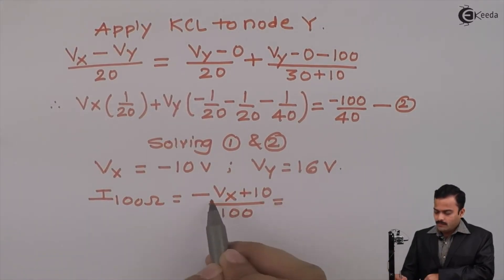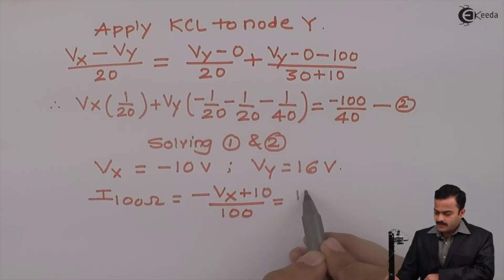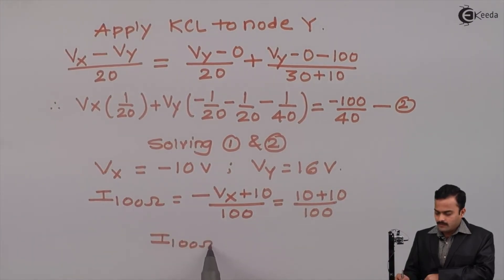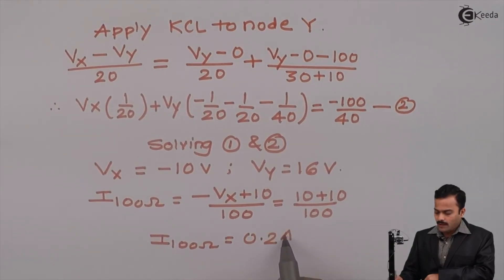So minus Vx will be minus minus 10, so it's plus 10 plus 10 divided by 100. So it is 20 by 100 and the current flowing through 100 ohm will ultimately be 0.2 ampere.